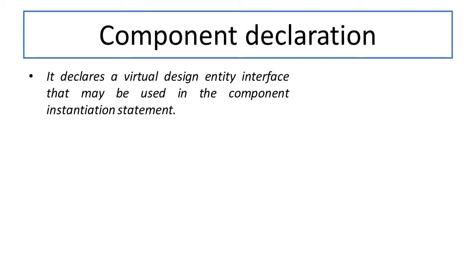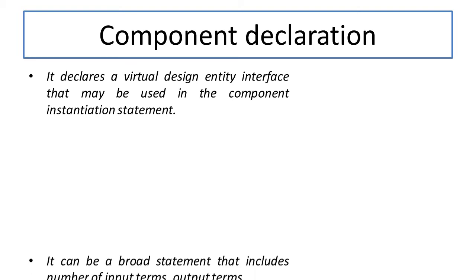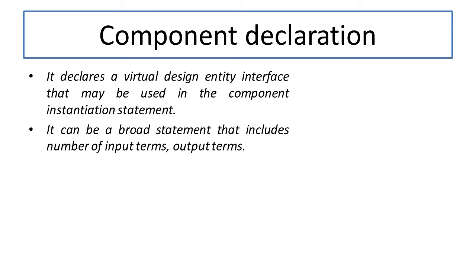Once the library is defined, we move to component declaration. In digital systems, we deal with components — there are seven components including three basic gates, two universal gates, and two special gates. Component declaration declares a virtual design entity interface that may be used in a component instantiation statement, acting as an interface covering both input and output sides.